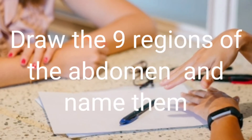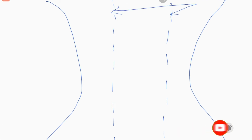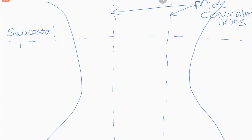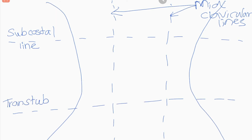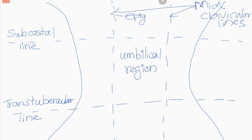Draw the nine regions of the abdomen and name them. These are the mid-clavicular lines. This is the subcostal line. This is the transtubercular line. This is the umbilical region. This is the epigastric region. This is the hypogastric region.